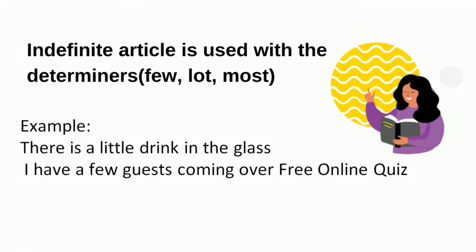Indefinite articles 'A' and 'An' are also used with determiners like few, lot, and most. For example: 'There is a little drink in the glass.' Here 'a little' is a determiner. And when there is a determiner like 'a few' in a sentence, the indefinite article is used along with it.